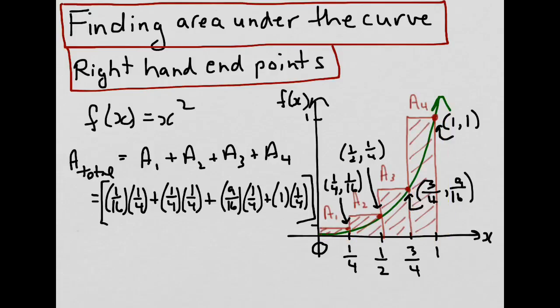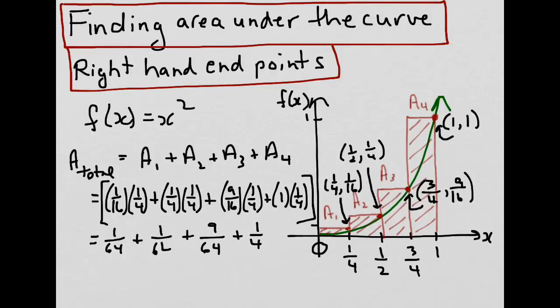I've rewritten the equation here, cleaned it up a little bit. To finish off, we can work out each of these parts. The first area would be 1 sixteenth, plus 1 sixteenth for the second, the third would be 9 sixteenths, and the fourth would be one quarter. To add these fractions, we need a common denominator, which would be 64. So 1 sixteenth becomes 4 sixty-fourths.